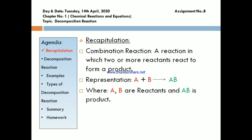Now let's recapitulate. In the last class we studied about combination reaction — a reaction in which two or more reactants react to form a single product. Its representation is: reactants A and B combine together to form a new product AB, where A and B are reactants and AB is the single product obtained.